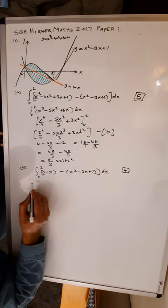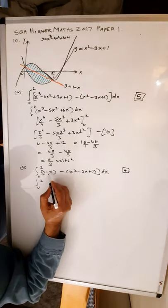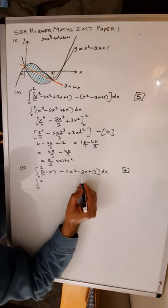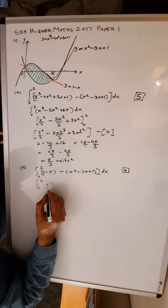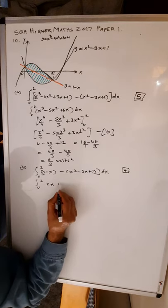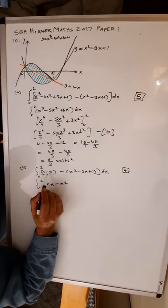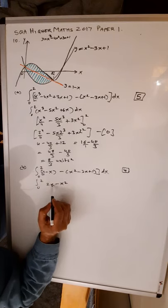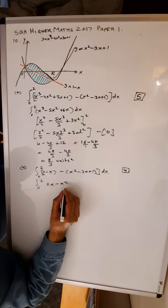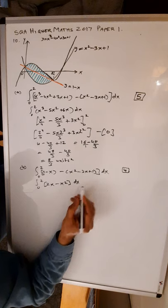Integral from 0 to 2: 1 minus 1 cancels away; minus x plus 3x gives 2x; and there is minus x squared. So the integrand simplifies to 2x minus x squared, with respect to x.